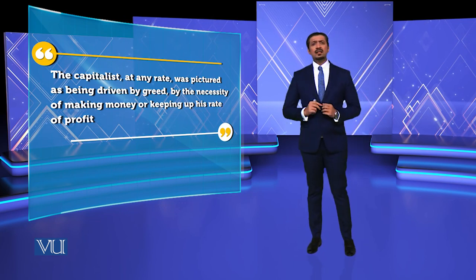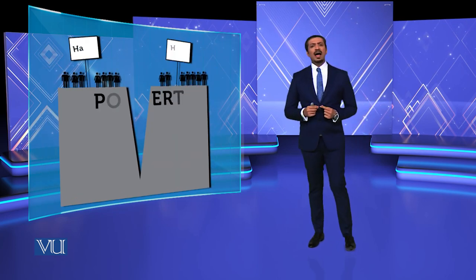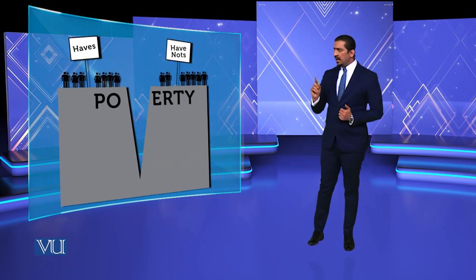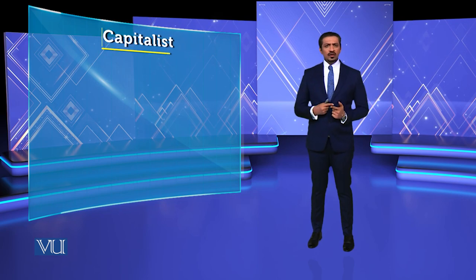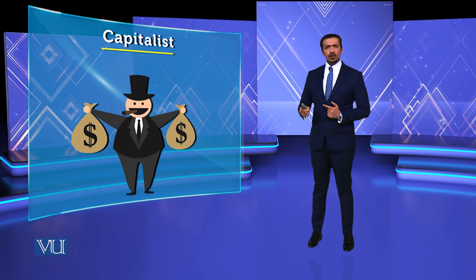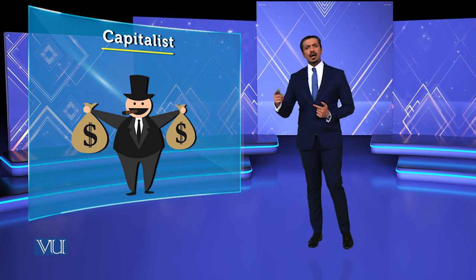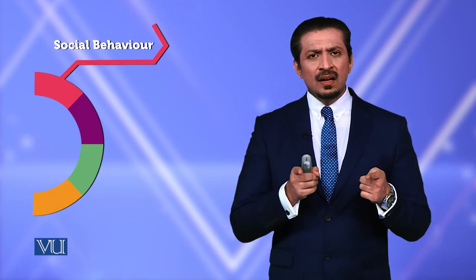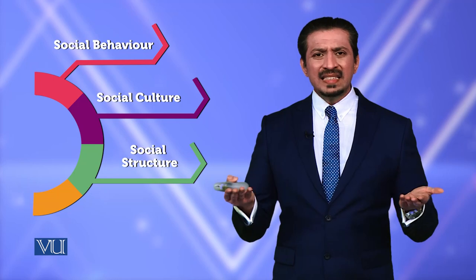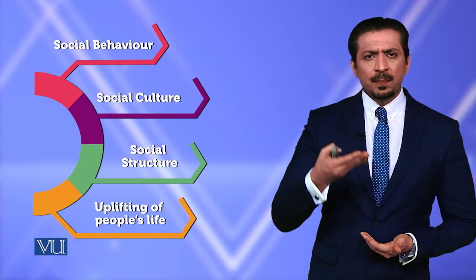Muashray barbaad hojate hain, tabaah hojate hain, imbalance hojate hain, inequality mein aa jate hain — have and have-nots mein chale jate hain — jab fascist capitalism hota hai. Woh apne poore motives dekhta hai, mazdoor ki mazdoori khaata hai, rate kam deta hai, kaam pe rakhta hai, apne profits barha raha hota hai aur profits ko share nahin karta. Basic formula: agar aap businessman hain aur aapka motive greed se drive ho raha hai, to motive banega profit. Agar aap entrepreneur hain, to aapka banega social behavior, social culture, social stature, social structure, aur uplifting of the people's life.